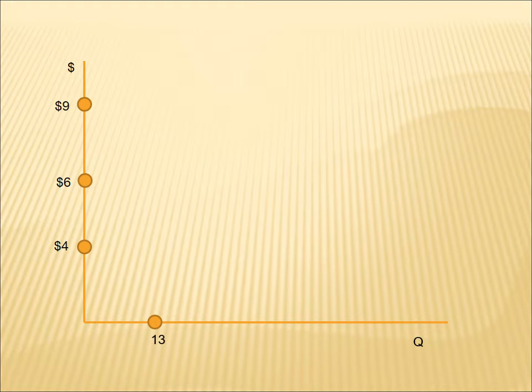Let's take a look at what a demand curve looks like and what it's trying to tell us. On the vertical axis, we're going to show the price for the product in question. We'll ask: what if the price is $9? What if the price is $6? What if the price is $4? Then along the horizontal axis, which measures the quantity that people buy, we ask how much do they buy at each price? At $9, for example, let's say they're buying 13 units every day. That first black dot represents behavior — how many units are purchased at the price of $9.